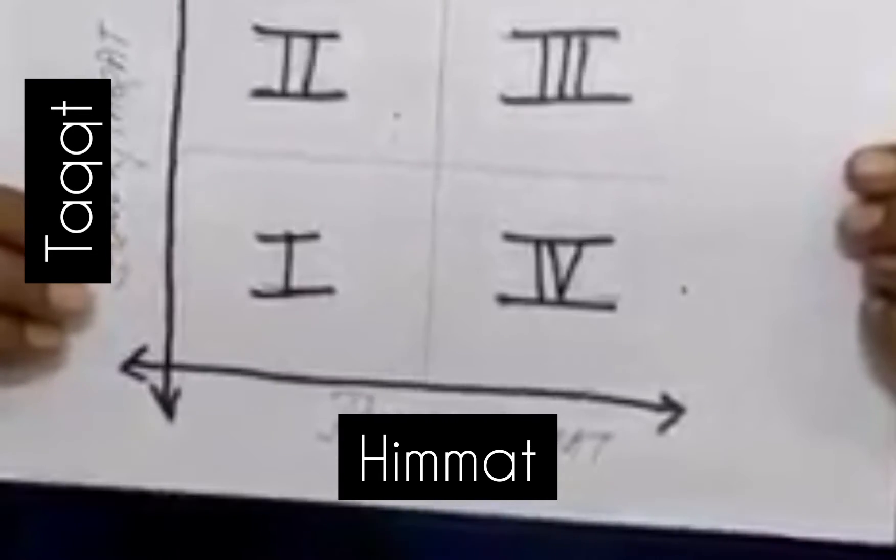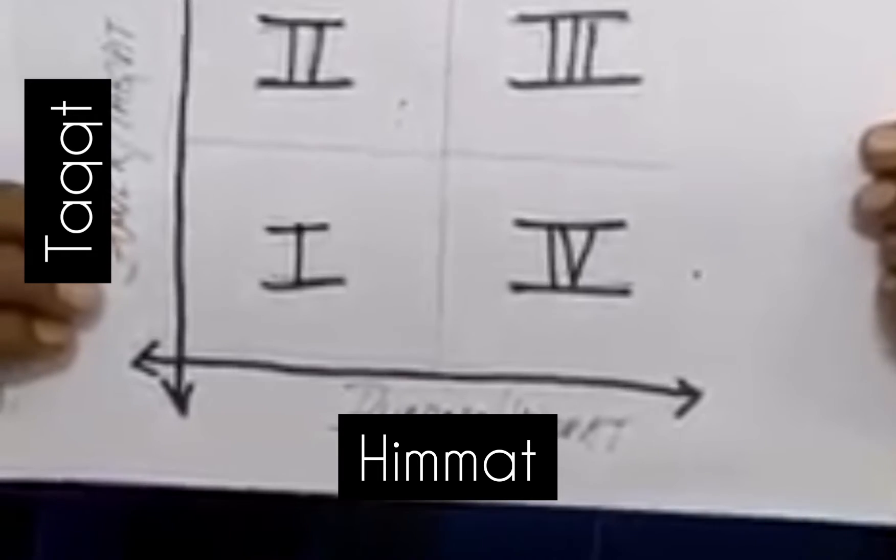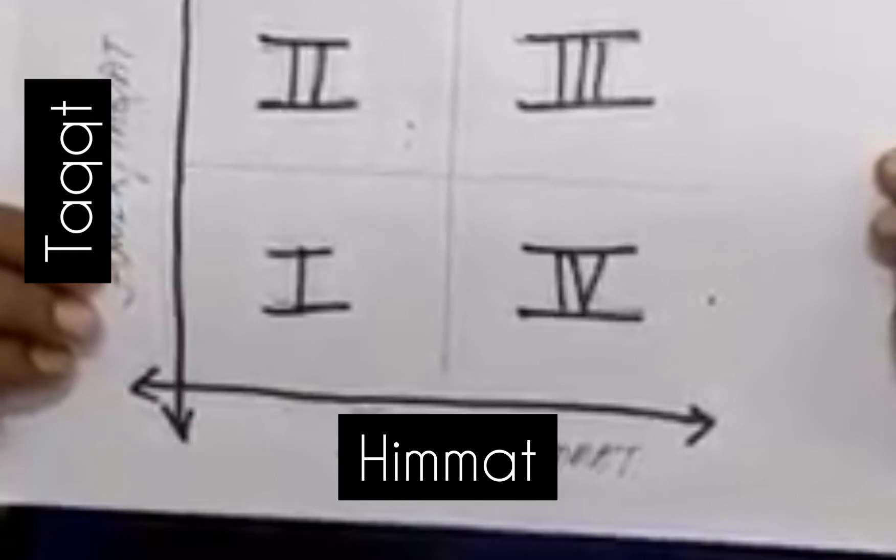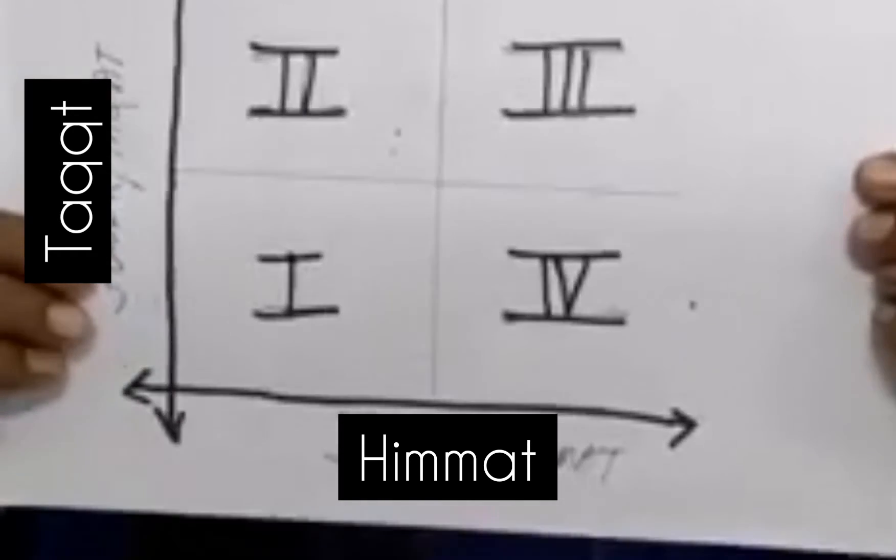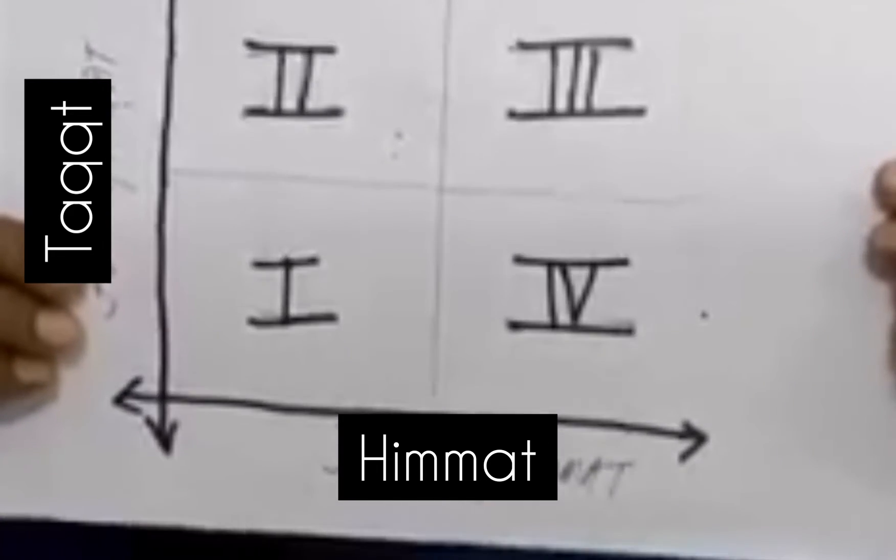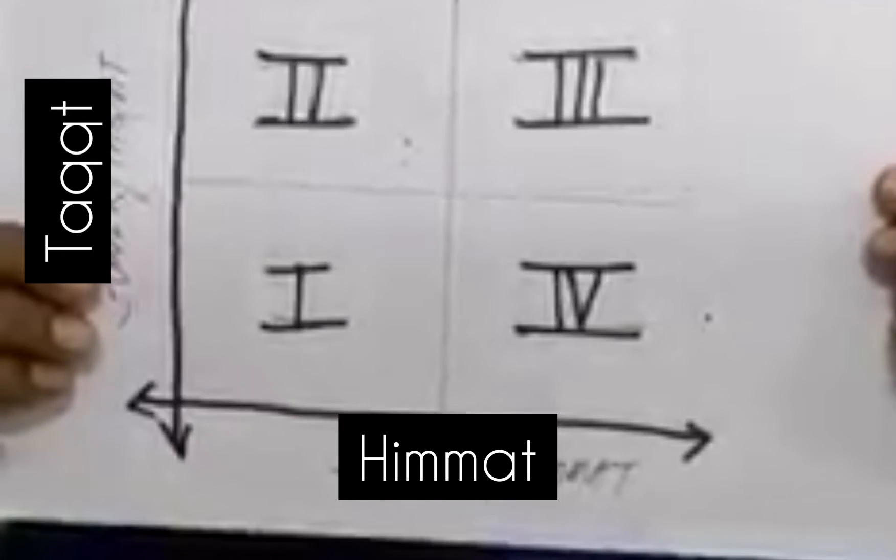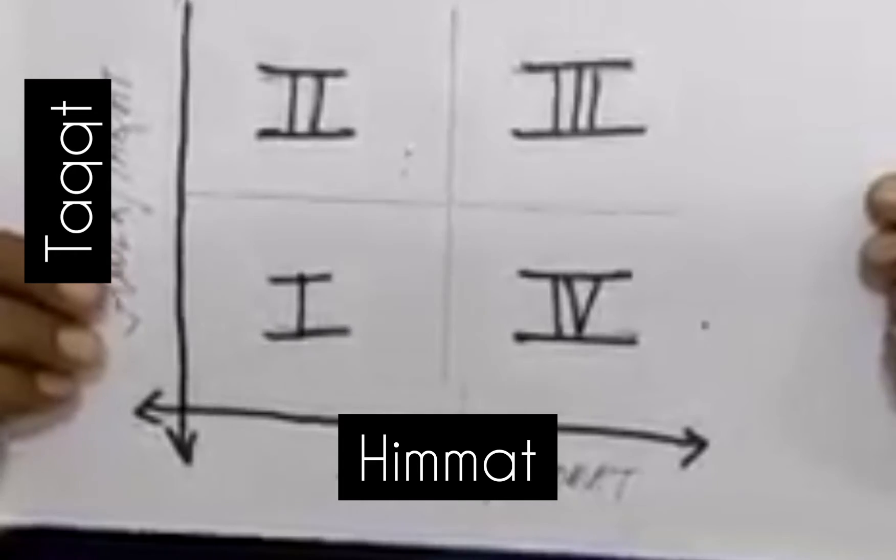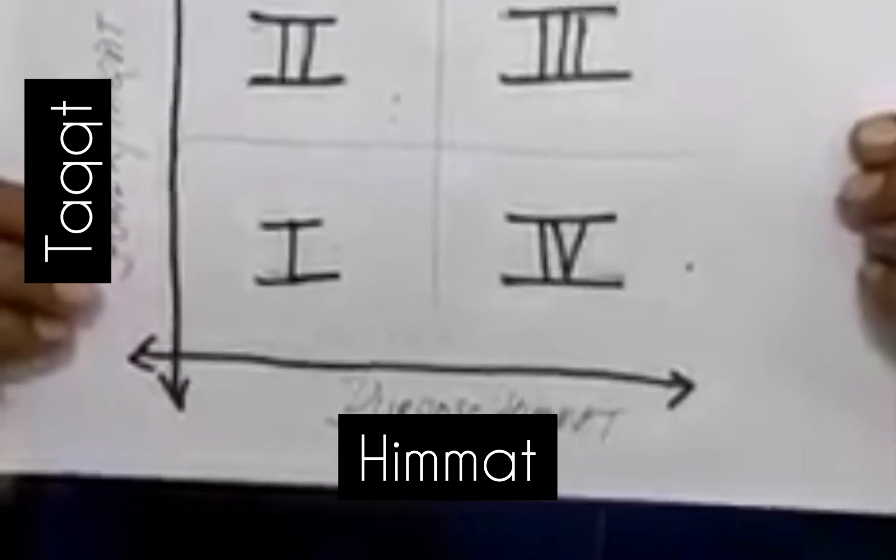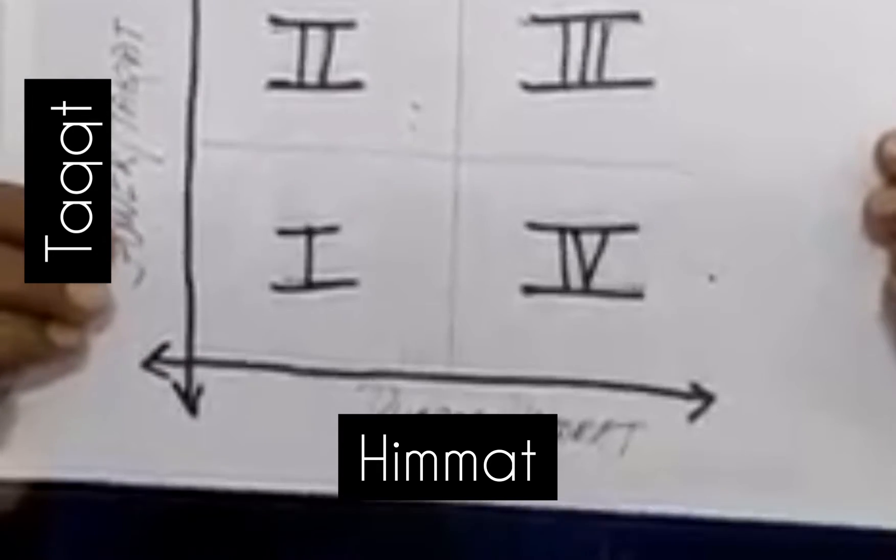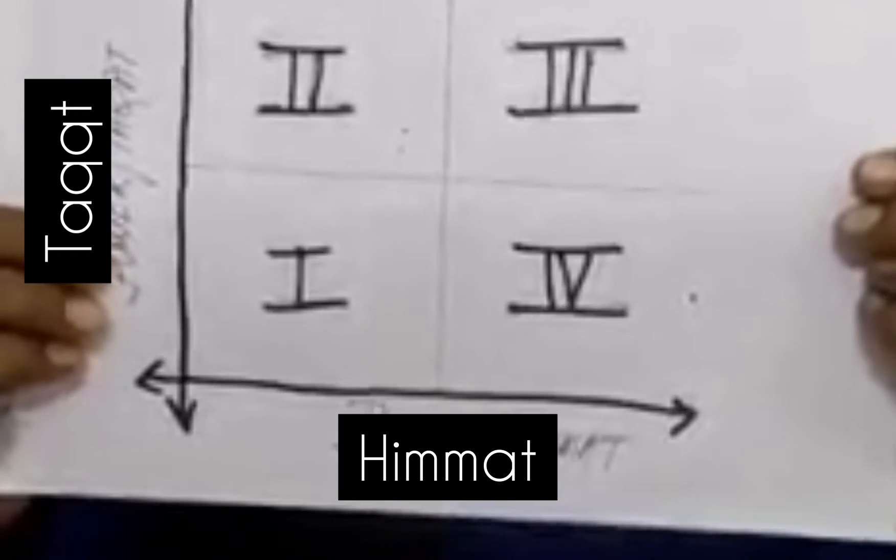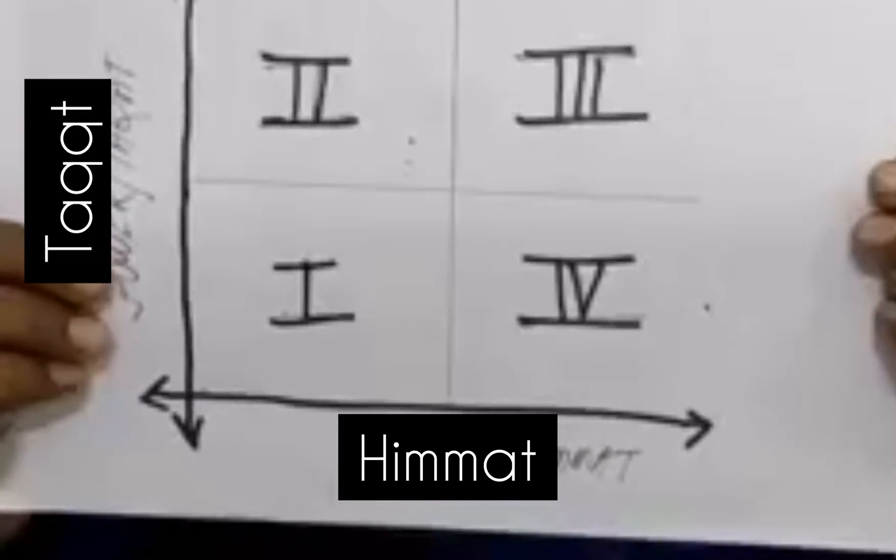First quadrant: if you closely take a look at all the quadrants, the first quadrant is all about when we have less power, minimal power, and minimal purpose. What happens? We won't be able to achieve anything in life, could be personal life or professional life. We won't do anything in life.